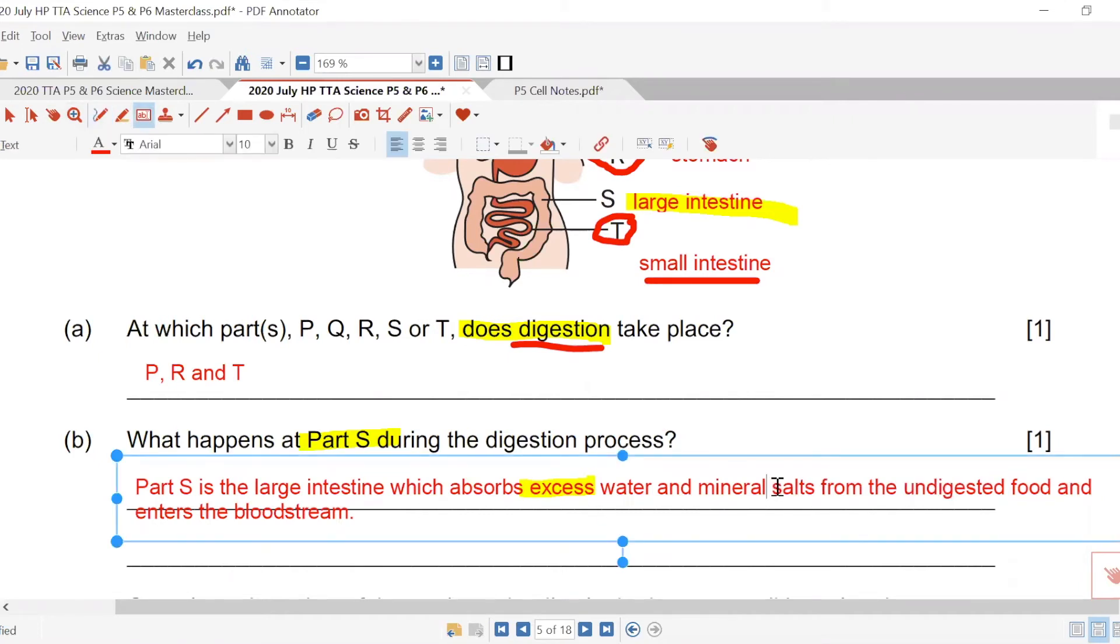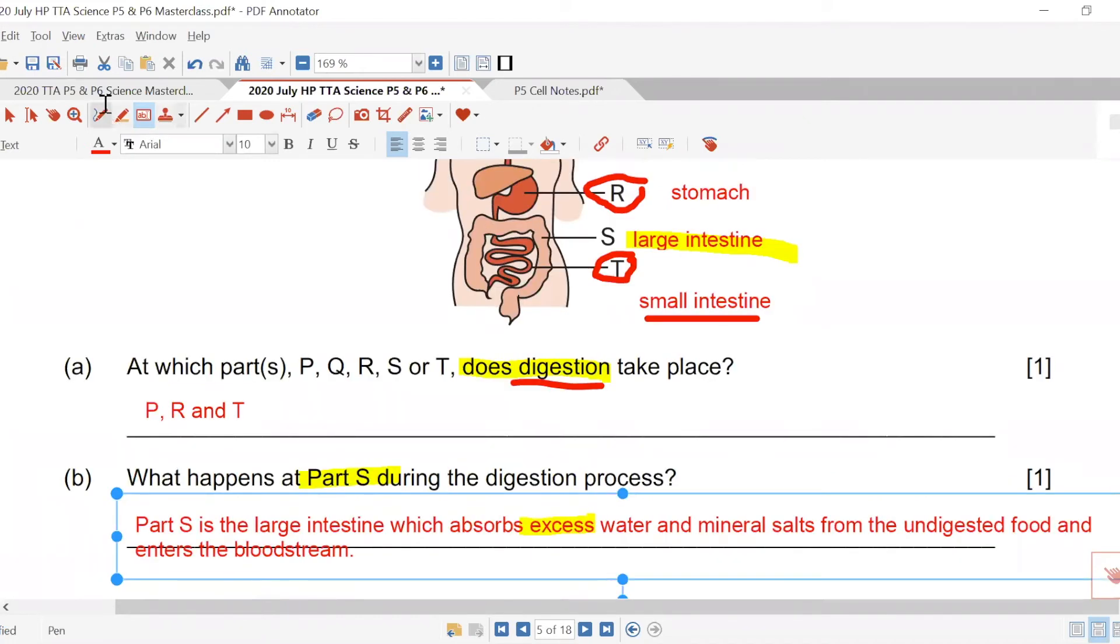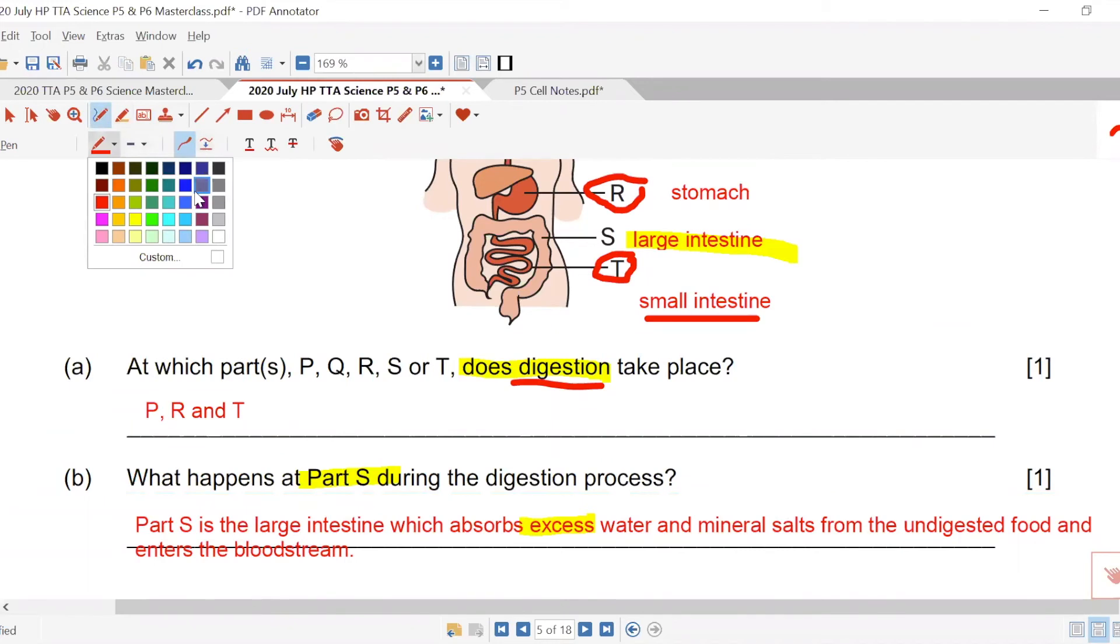Do you know that your small intestine not only absorbs your digested food, it also absorbs your water. Just that the water you absorb for the small intestine is not as much as the large intestine. Large intestine absorbs more of the water. That's why we don't really talk about absorption of water in the small intestine.